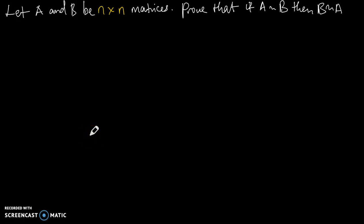Welcome to Chips of Math Physics in this linear algebra series. I want us to prove that A and B are similar matrices. Let A and B be n by n matrices. Prove that if A is similar to B, then B is similar to A.